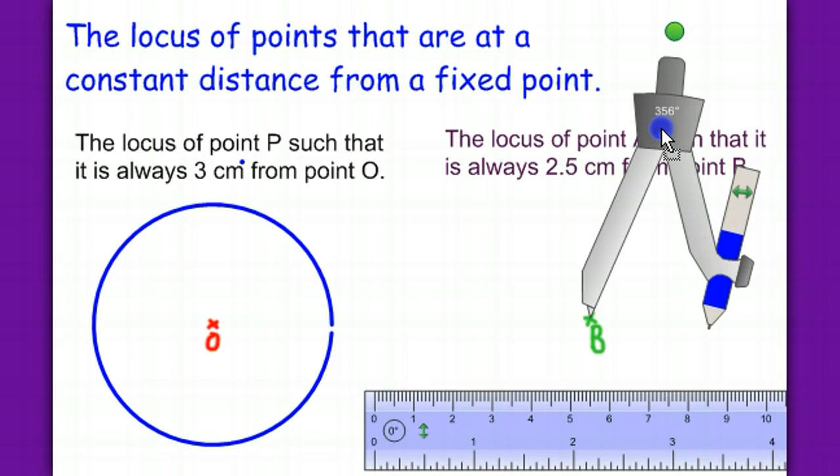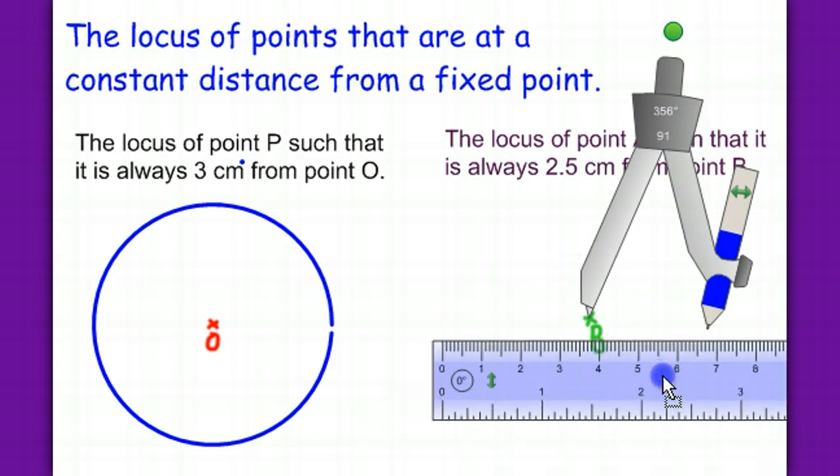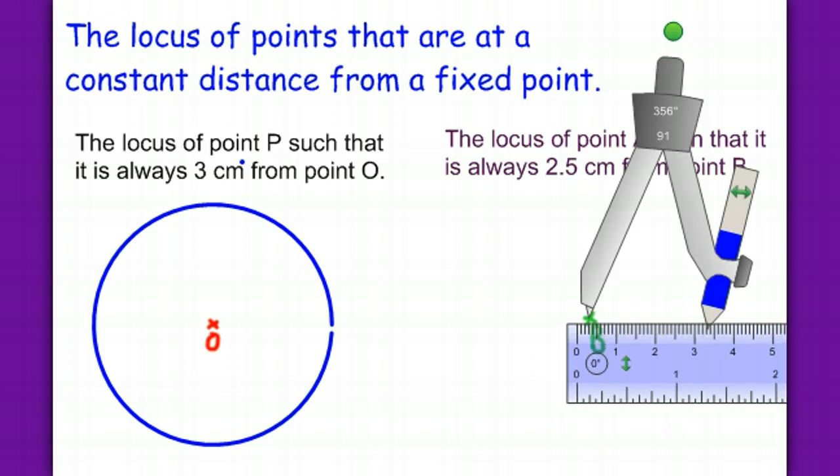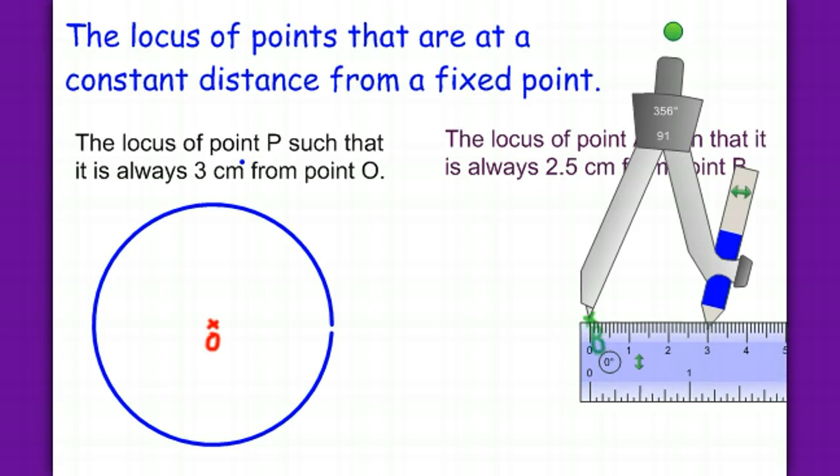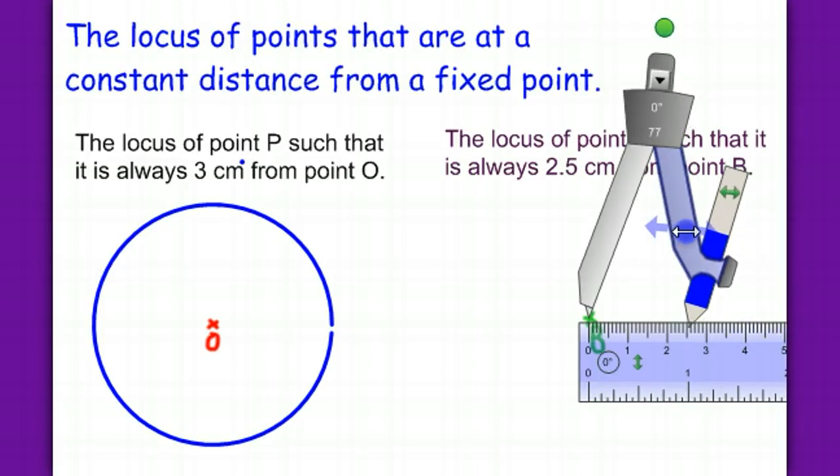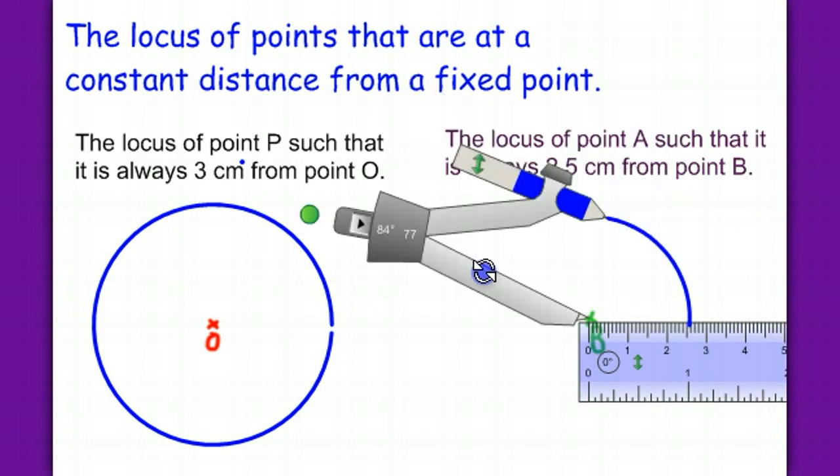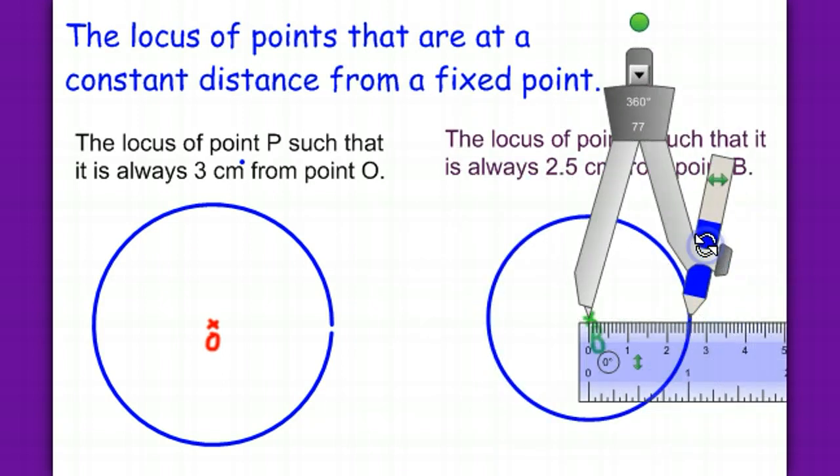At B, from B is 2.5. That's 2.5. And here is our locus.